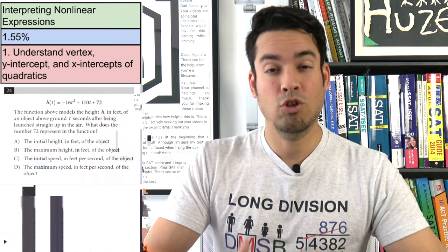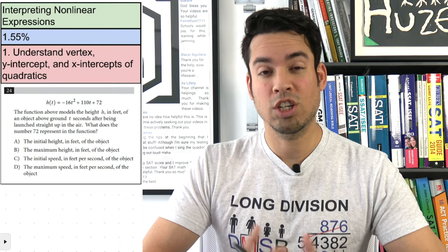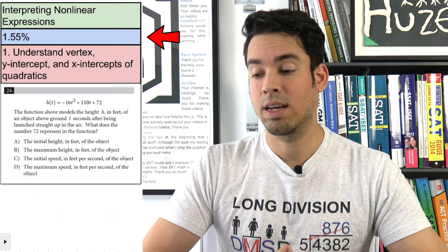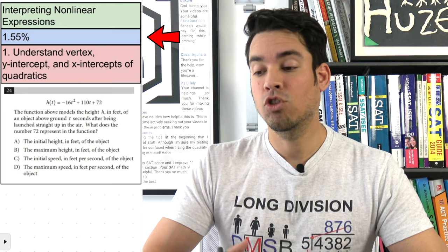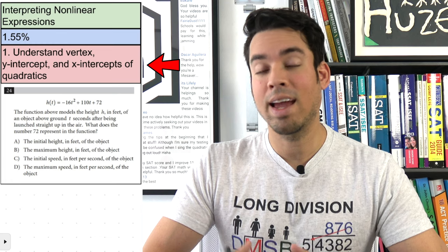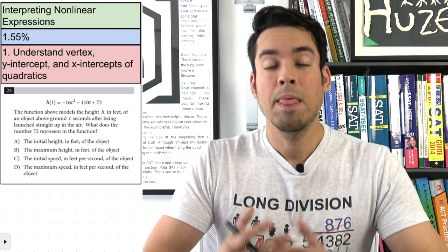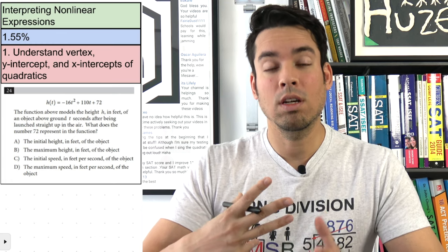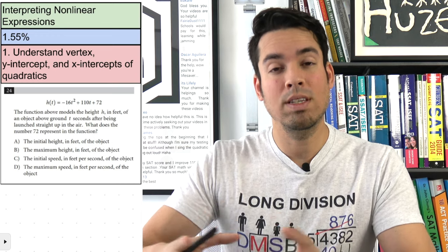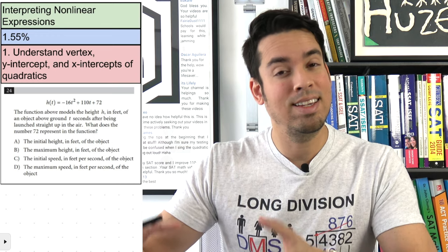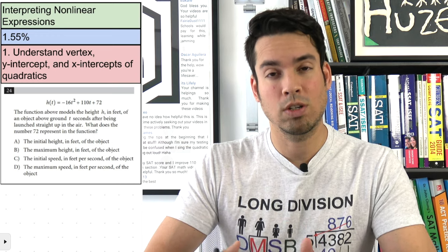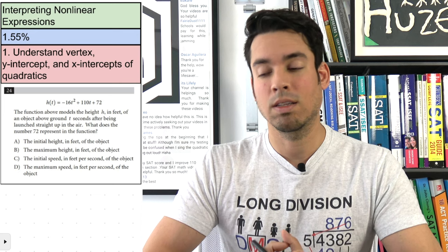First we have interpreting nonlinear expressions, which constitutes 1.55% of the test. The strategy here is to understand the vertex, y-intercept, and x-intercept of quadratics. It's a good idea to wrap your mind around what all three of these key elements mean to a quadratic or a real-life situation that a quadratic function is modeling.